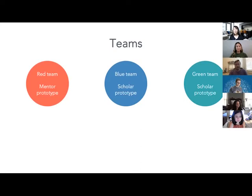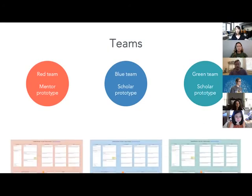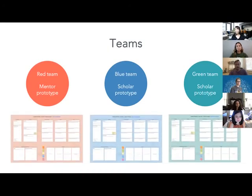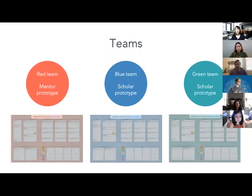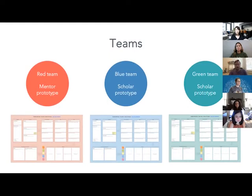Let's start with the exercises. You'll be put into one of three groups: the red team will test the mentor prototype, and the blue and green teams will test the scholar prototype. Everyone will be working off the same Miro board, but each team will have their own workspace indicated by the background color. The first thing you should do once in your groups is get to know the right prototype — the link is in the header and is the same one Lena sent out yesterday. Meredith, Chris, and I will each be in one of the rooms as facilitators.